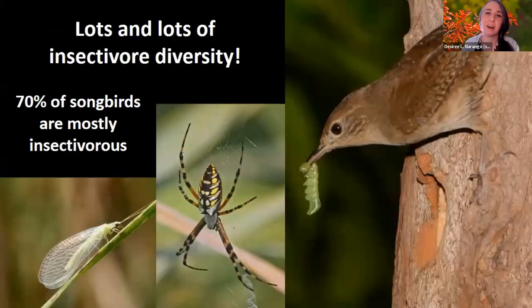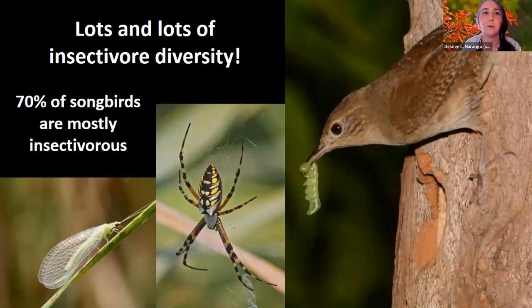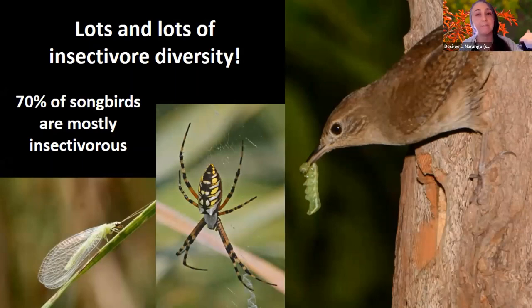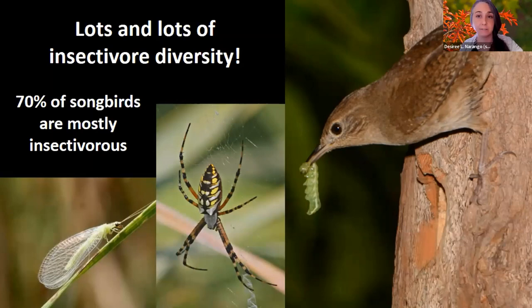Because of all this insect diversity, we also have lots of insectivore diversity: neuropteran lacewings, spiders, and of course our songbirds. More than 70% of our songbirds are mostly insectivorous throughout their life cycle, with more than 50% of their diet reliant on insects. So we need to conserve the trees that conserve our insect diversity, which is very intimately related to our bird conservation as well.